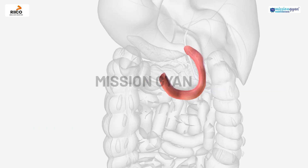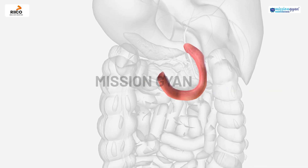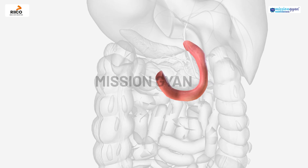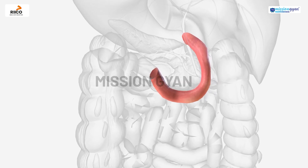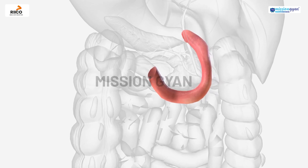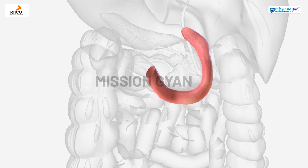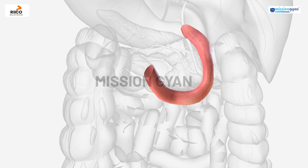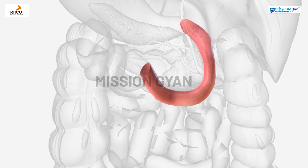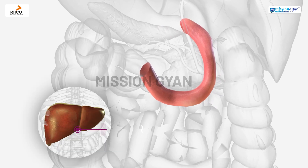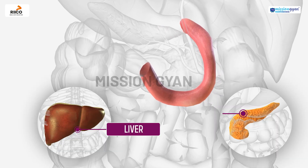The duodenum is a C-shaped structure that plays a critical role in digestion. It receives the secretions of the liver and pancreas.